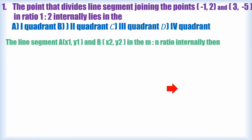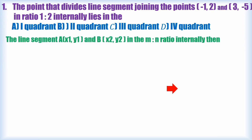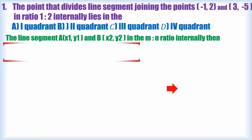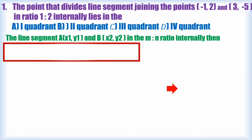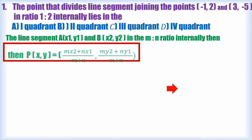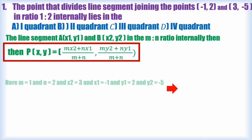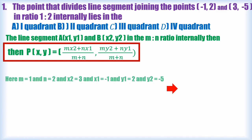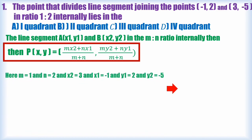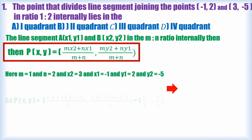The section formula is P(x, y) = (mx₂ + nx₁) / (m + n). To remember it: m is multiplied with x₂ (two spaces away) and n is multiplied with x₁ (one space). Similarly for y: (my₂ + ny₁) / (m + n).